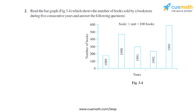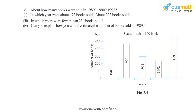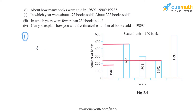The first part asks about how many books were sold in 1989, 1990, and 1992. We will draw a horizontal line and check the approximate number of books sold. As we can see, the number of books sold in 1989 is very close to 200, so we can say approximately 180 books were sold.